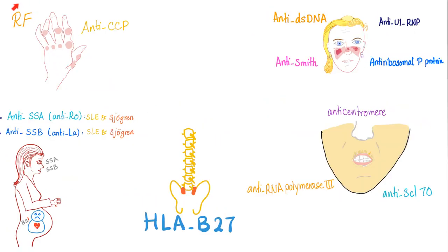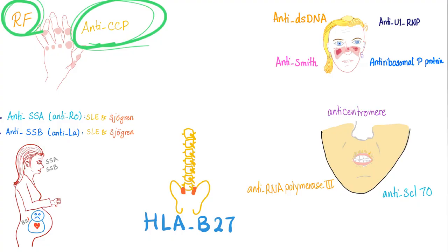What will you see in rheumatoid? Rheumatoid factor and anti-CCP. Lupus: anti-double-stranded DNA, anti-Smith, anti-U1-RNP, and anti-ribosomal P protein. Lupus or Sjogren: SSA and SSB. Scleroderma: limited — anti-centromere; systemic progressive — anti-RNA polymerase and anti-scleroderma-70. Seronegative spondyloarthropathies: negative for rheumatoid factor and CCP, but positive for HLA-B27.